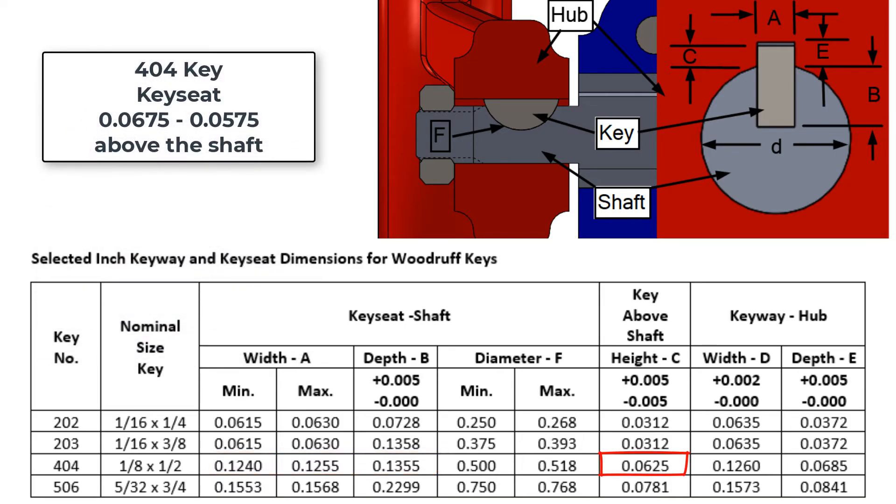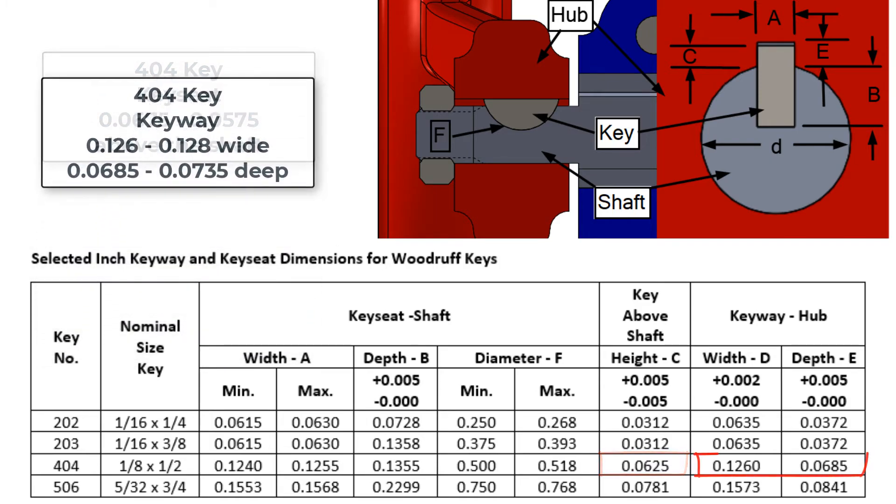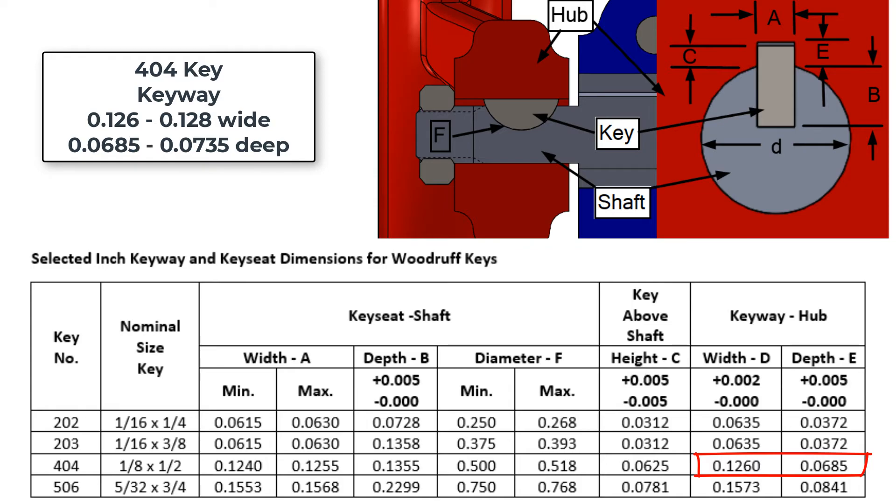The key could be above the key seat from 0.0675 to 0.0575. For the keyway in the hub, the width would be 0.126 to 0.128 and the depth would be 0.0685 to 0.0735.